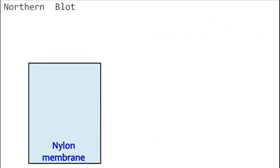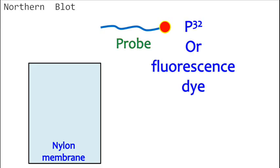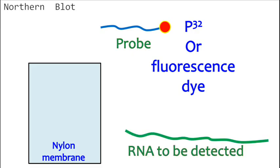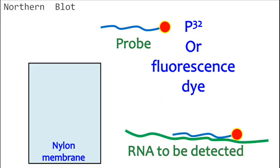Once RNA is immobilized, it is treated with a labeled probe. The probe can either be single-stranded DNA or RNA labeled with P32 or fluorescence dye. The probe has a complementary sequence to the RNA which is to be detected.